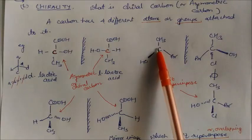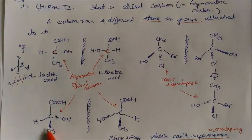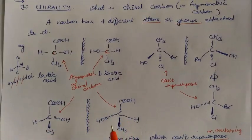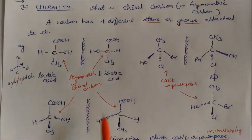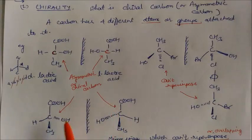So this is a chiral molecule, or you can say this carbon is called a chiral carbon. Similarly, in this structure also, this carbon is a chiral carbon having four different groups. Again if you take the mirror image, you have this structure, and this is also a chiral carbon. These two structures are called enantiomers because the structures are different and they cannot be superimposed onto each other.